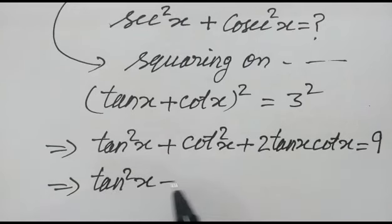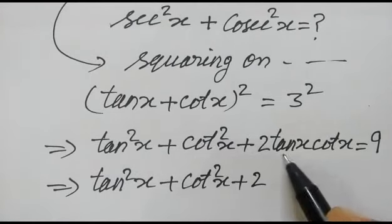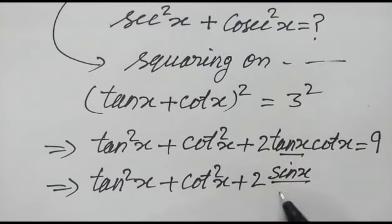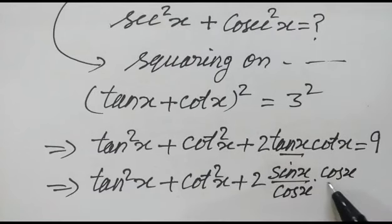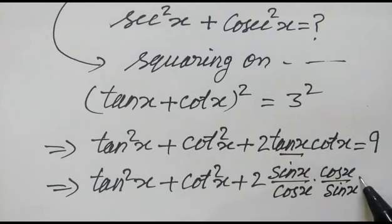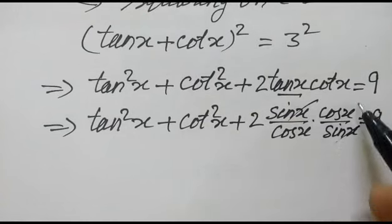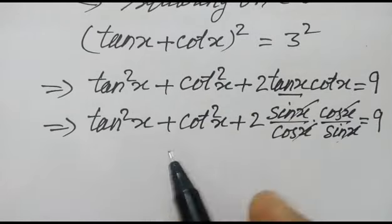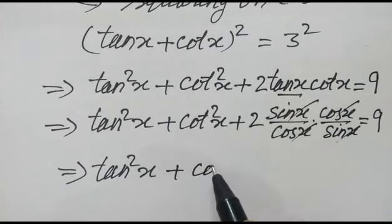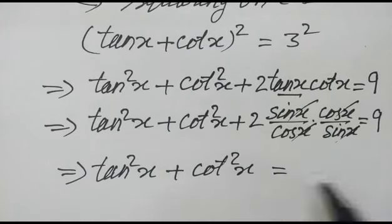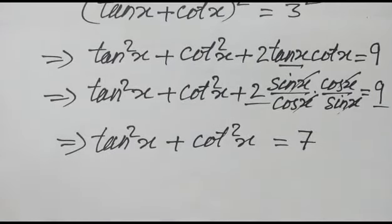So tan square x plus cot square x plus 2, and tan x is sin x over cos x, cot x is cos x over sin x. So sin x and sin x cancel out, cos x and cos x cancel out. Now we have tan square x plus cot square x plus 2 equals 9, so tan square x plus cot square x equals 7.